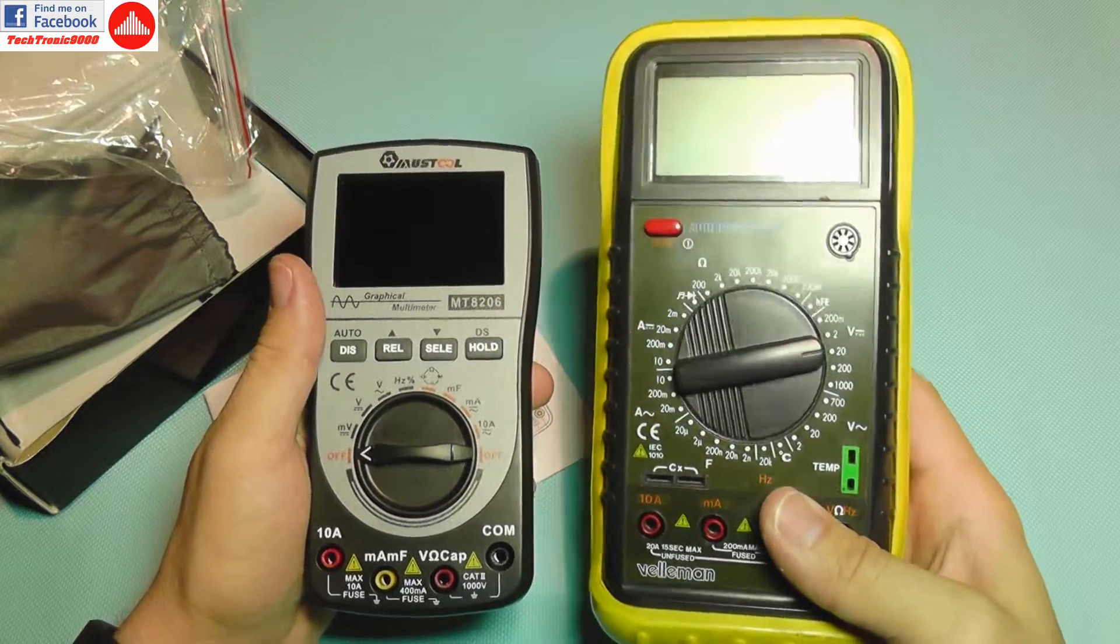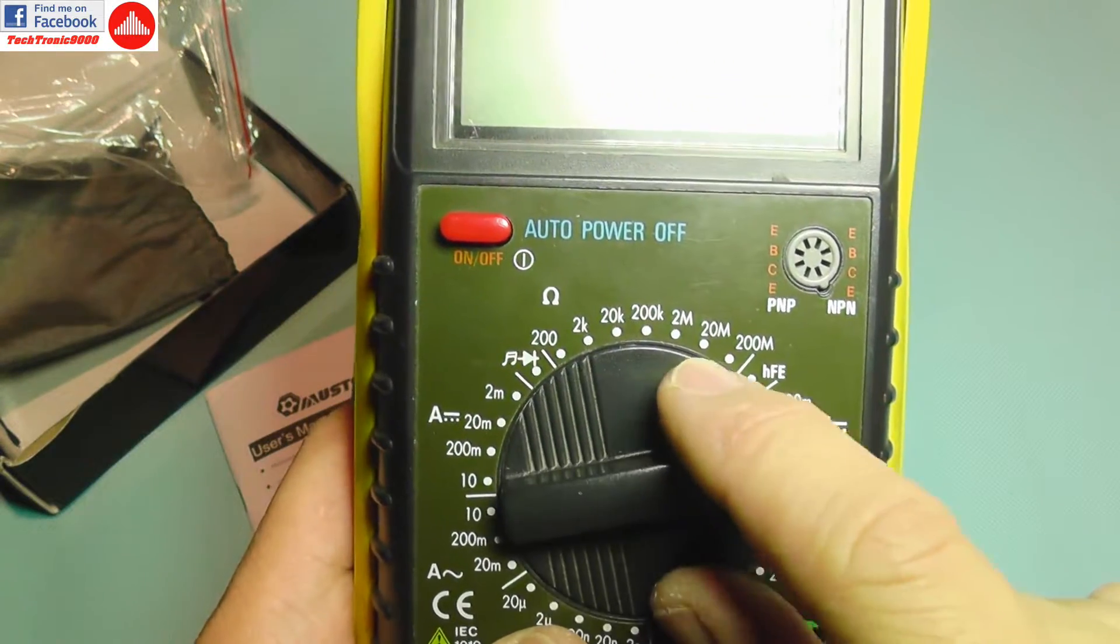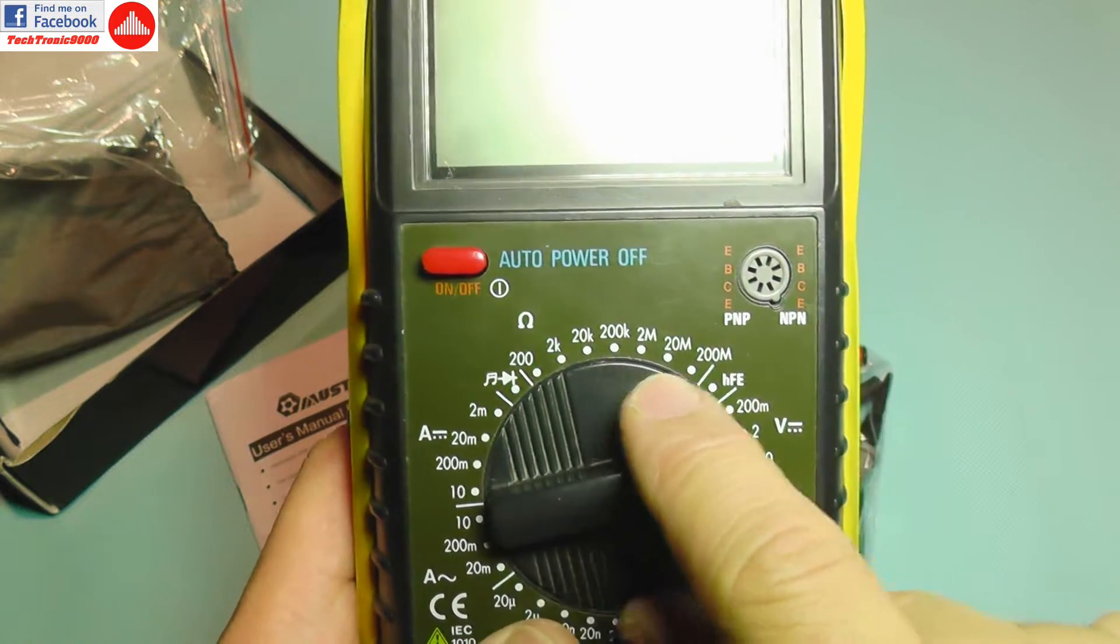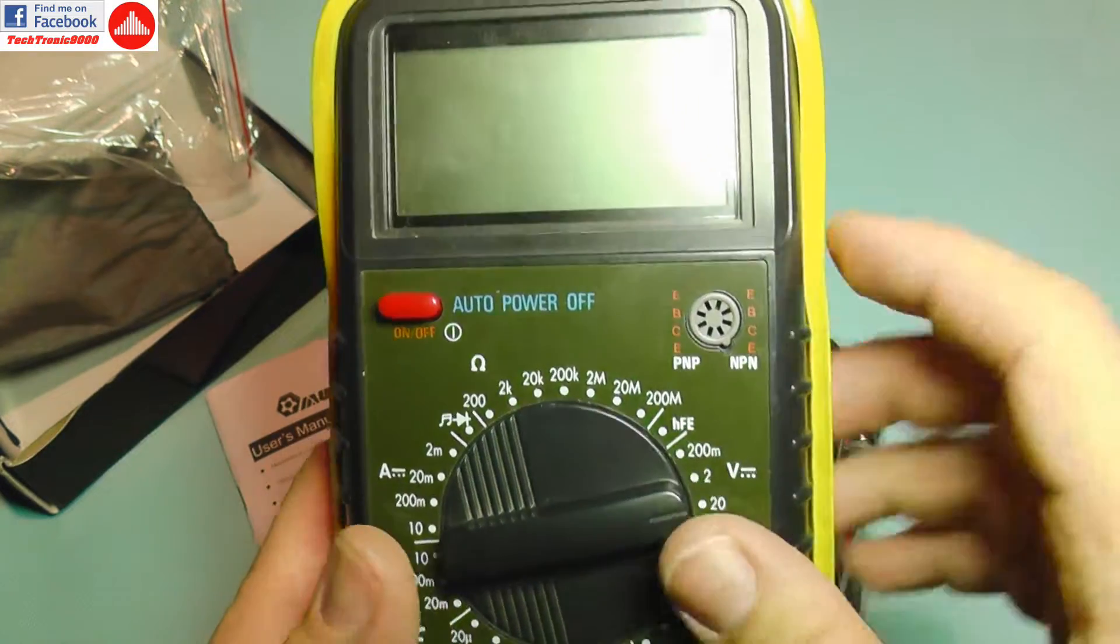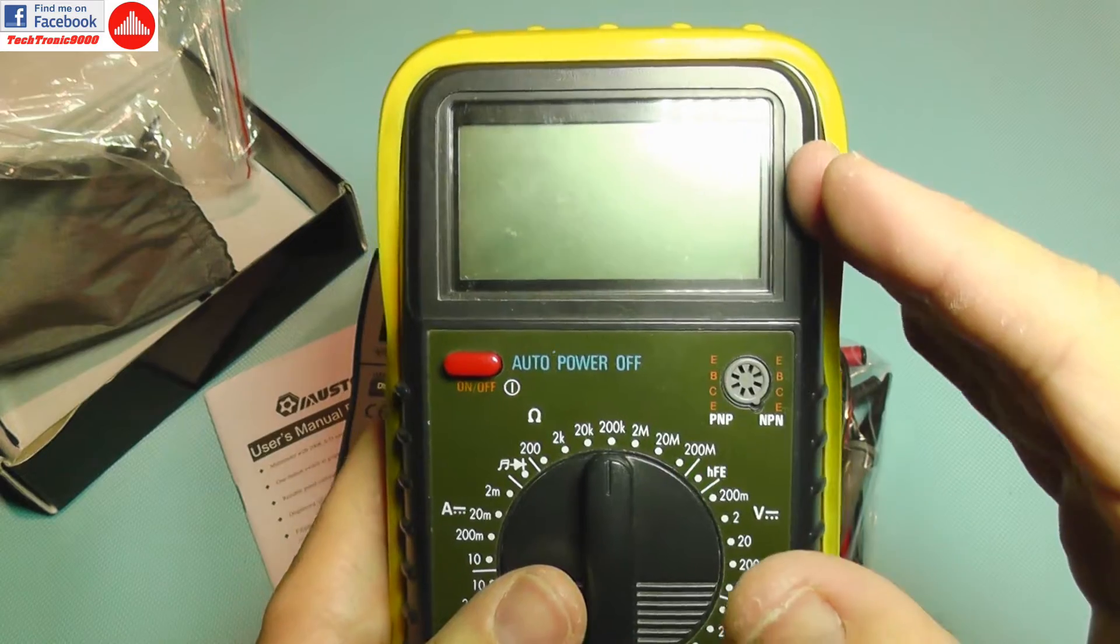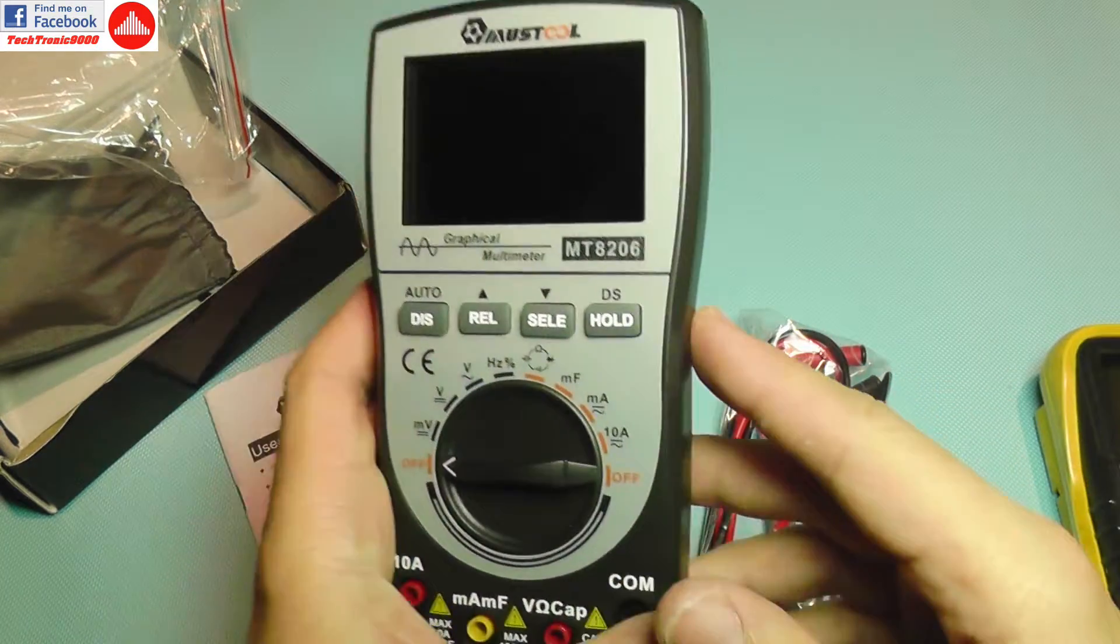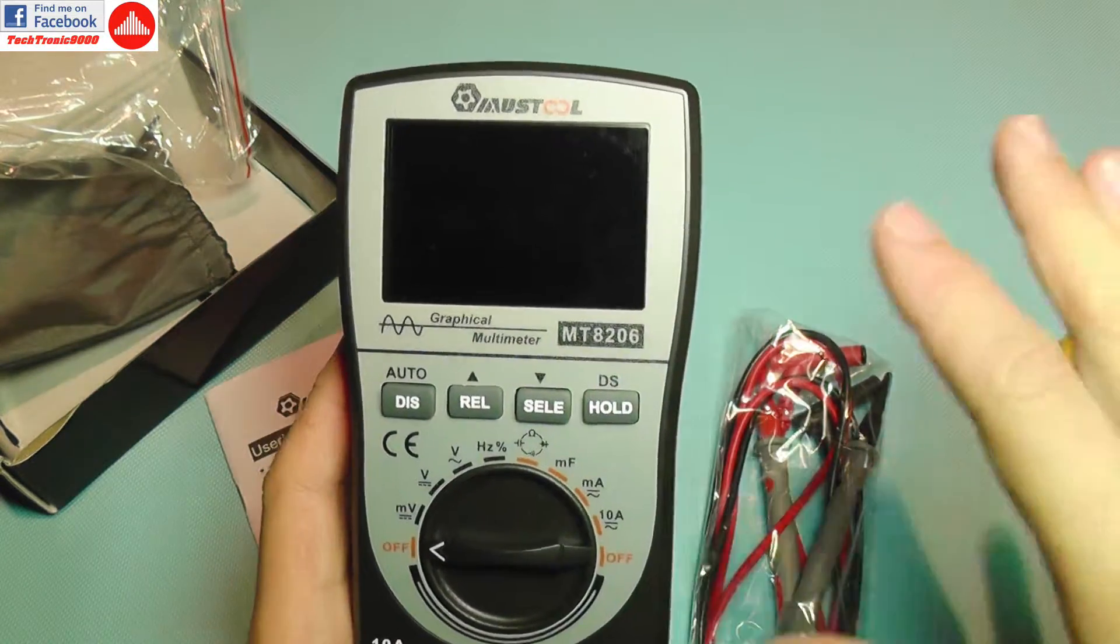This is not like on this older model. For instance, here you have to select the range for resistance from 200 ohms up to 200 megaohms. So you need to have the proper range to get a correct reading.